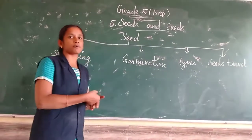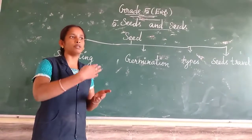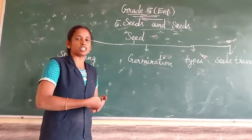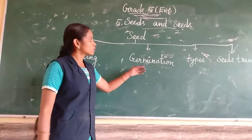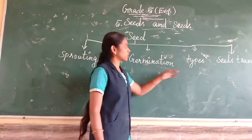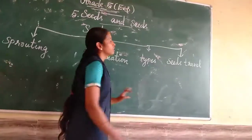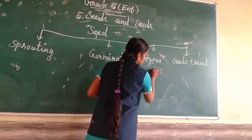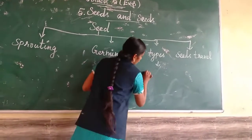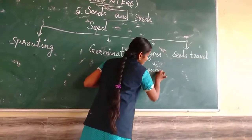After the sprouting, we can see the full plant texture. So that is called germination. Then, types of your seed.